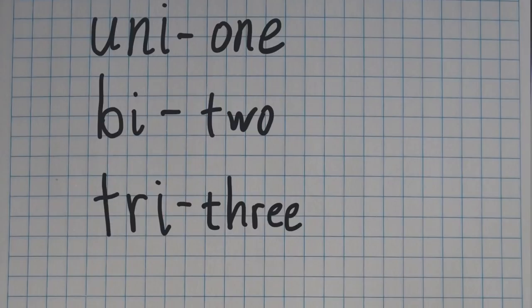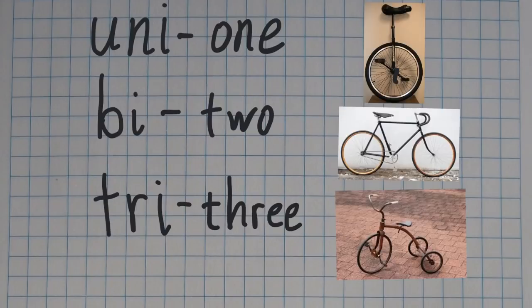The most obvious example of this comes from your guide words. A unicycle has one wheel, or one cycle. A bicycle has two wheels, a tricycle has three wheels. So very simple: uni, bi, tri - one, two, three.